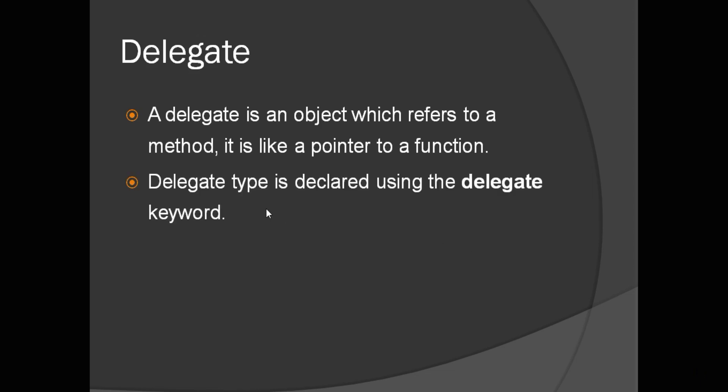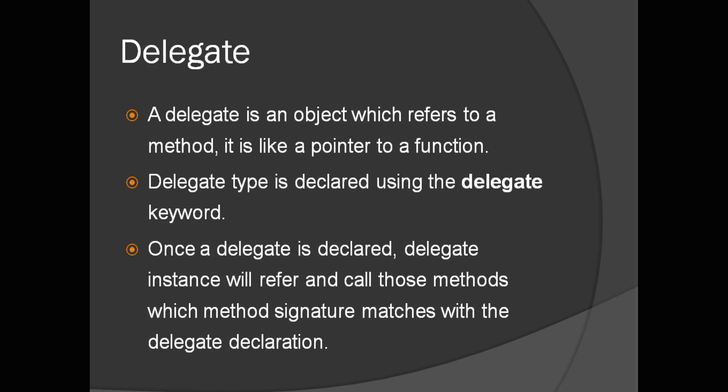You use the delegate keyword to define your delegate — we are going to see this practically so it will be clearer. Once you create a delegate, you have to create an object of that delegate, and it will refer to a method whose method signature matches the delegate declaration. Remember: a delegate will point only to a method whose method signature and delegate declaration match.